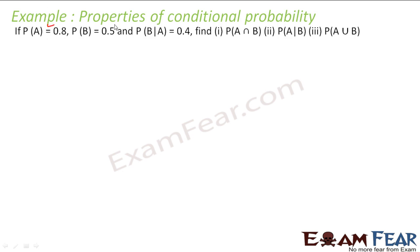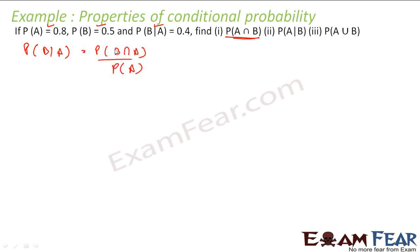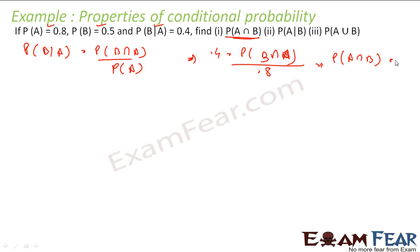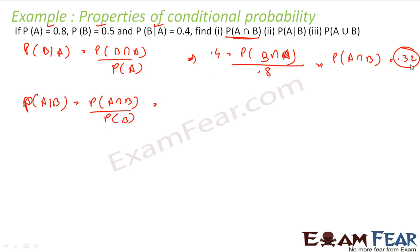We can take some more examples. Probability of A is given, probability of B is given, and probability of B given A is given — we have to find all these values. We know that probability of B given A is nothing but probability of B intersection A divided by probability of A. So, 0.4 equals probability of A intersection B divided by probability of A, which is 0.8. Therefore probability of A intersection B is 0.4 times 0.8, that is 0.32. Now probability of A given B is nothing but probability of A intersection B divided by probability of B. A intersection B we just found is 0.32.